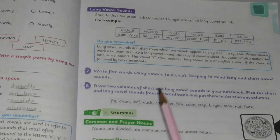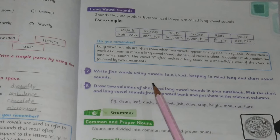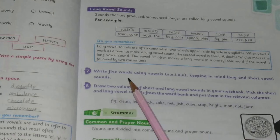Now here is another question: Write five words using vowels A, E, I, O, U, keeping in mind long and short vowel sounds.